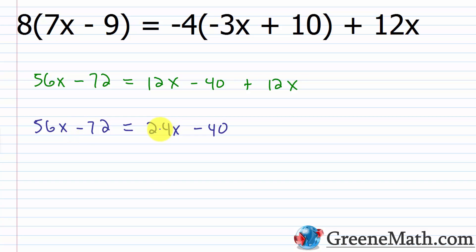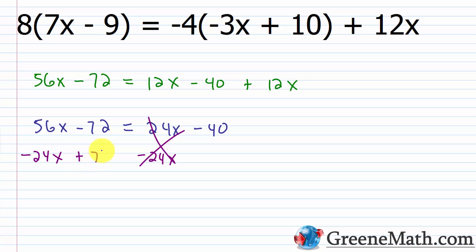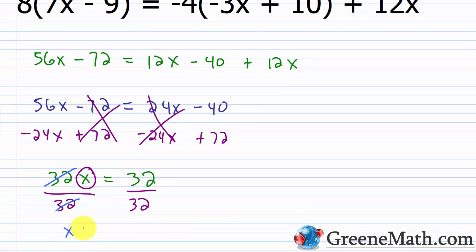Now I want to move all variable terms to one side and all numbers to the other. I'll do it in one step: subtract 24x from each side and add 72 to each side. On the left: 56x minus 24x is 32x. On the right: negative 40 plus 72 is 32. So I have 32x equals 32. To isolate x, I divide both sides by 32 — this cancels — leaving x equals 32 over 32, which is 1. So x equals 1 is my solution.